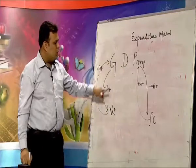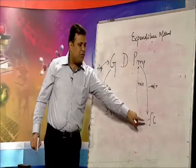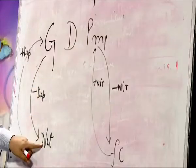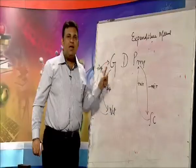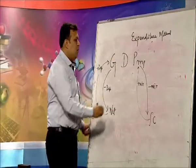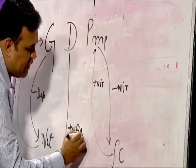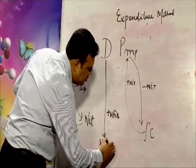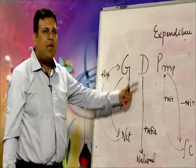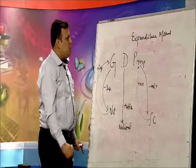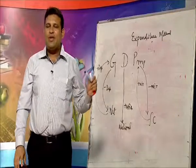Deducting depreciation from gross gives net; market price minus NIT gives factor cost — so it becomes net domestic product at factor cost, which is domestic income. NDP at FC is domestic income. If you want to make it national, just add NFIA. This same practice was done in the introductory session of national income, and the same is applied here in the expenditure method.